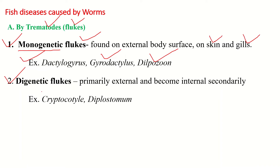The second type is called digenetic flukes. Digenetic flukes require two hosts to complete their life cycle. If the host other than the fish is destroyed, their life cycle never gets completed, making control easier. Digenetic flukes are primarily external and become internal secondarily. Some examples include Cryptostyle and Diplostomum, which are digenetic flukes causing disease to fishes.